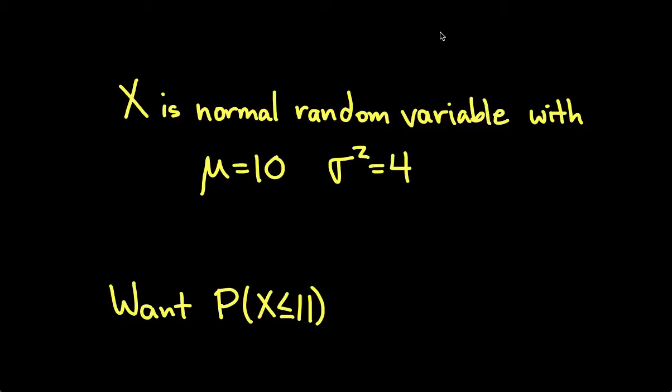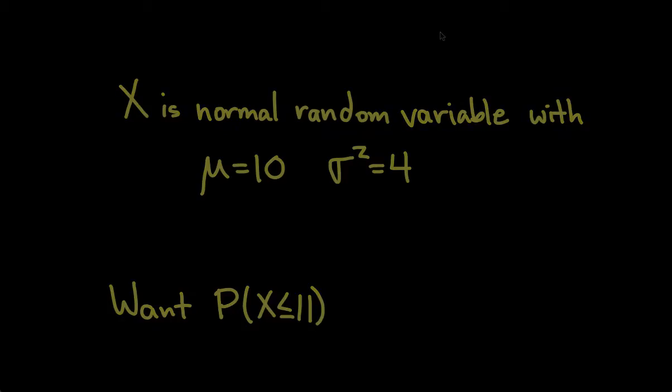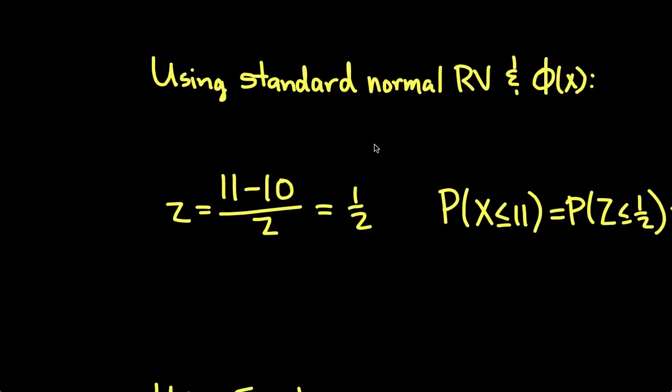Let's suppose that we want to compute the probability that x is less than 11. One way to compute this probability is to convert x into a standard normal random variable, and then use probabilities associated with the standard normal random variable, which are typically tabulated at the end of a book.